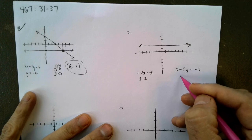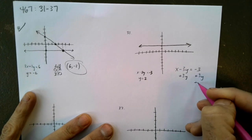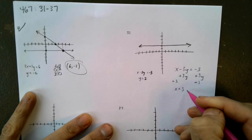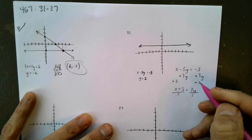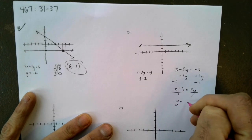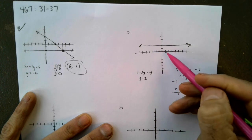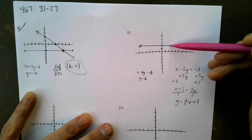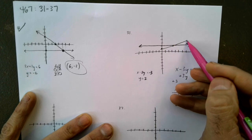So, x minus 3y equals negative 3. I'm going to add 3y to both sides and then add 3 to both sides. So now I've got x plus 3 equals 3y. Divide by 3. Excuse me. Y equals 1 third x plus 1. Okay. So, there's the 1. Then I'm going to go up 1. 1, 2, 3. Okay. It's a gimme.